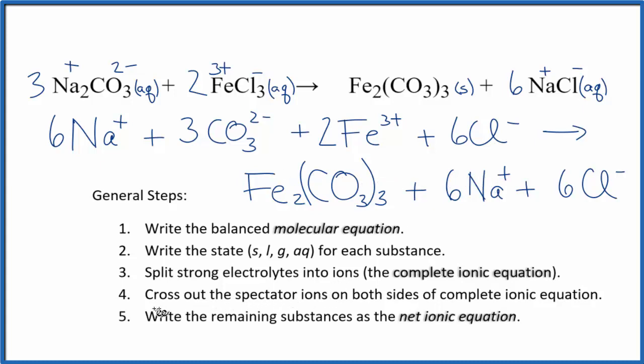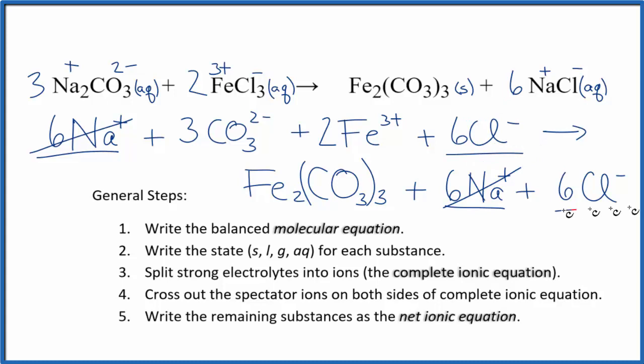Once we have this, we can cross out spectator ions. They appear on both sides of this complete ionic equation. Essentially, they didn't change. So we have our reactants here and our products here. We have 6 sodium ions on the reactants and 6 on the products. Just cross those out. Those are spectator ions. Likewise, we have 6 chloride ions here in the reactants, 6 in the product. Cross them out. And once we've done that, everything else is unique. That's going to leave us with our net ionic equation.